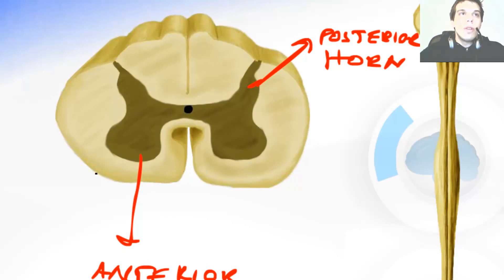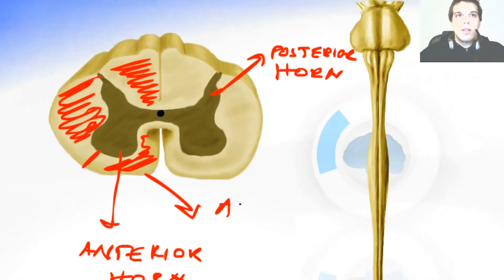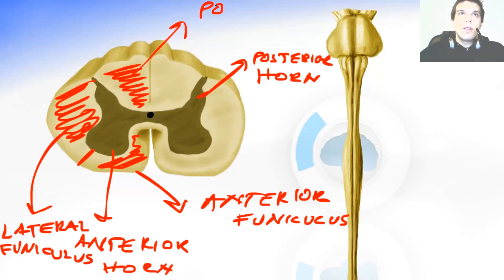Now in the white matter we can distinguish the lateral funiculus, the posterior funiculus and the anterior funiculus. This is the anterior funiculus. This is the lateral funiculus and this over here is the posterior funiculus.